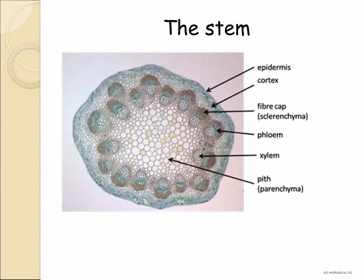Let's have a look at the stem. The xylem and phloem in a dicotyledonous stem form vascular bundles that are arranged towards the outside of the stem, as you can see in this diagram. The reason for this is that the vascular bundles, along with associated sclerenchyma fibres, not only transport material but also provide support in herbaceous plants. The main forces acting on a stem are lateral ones caused by the action of wind. These forces are resisted by the outer cylinder of supporting tissue. Therefore, the vascular bundles form a discontinuous ring towards the edge, and being discontinuous, it also allows the stem to be flexible in the wind.